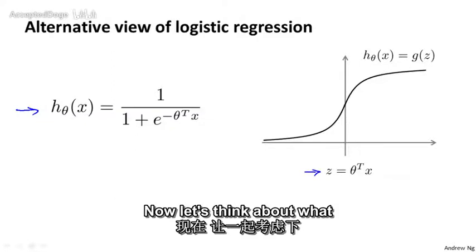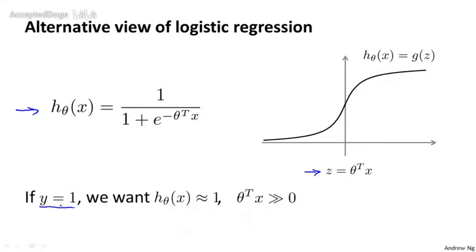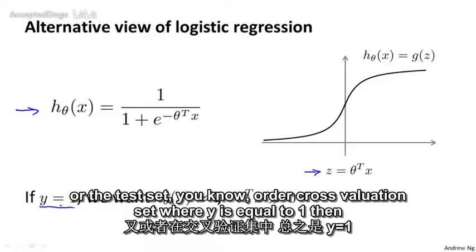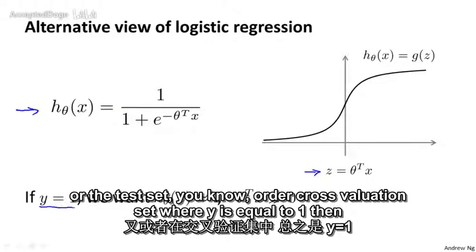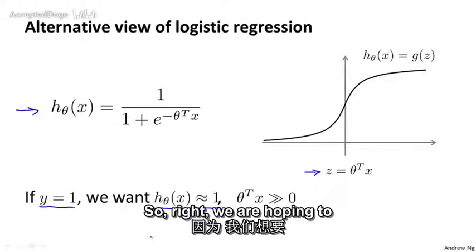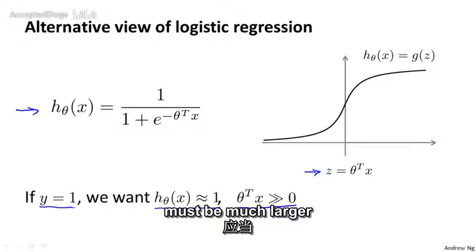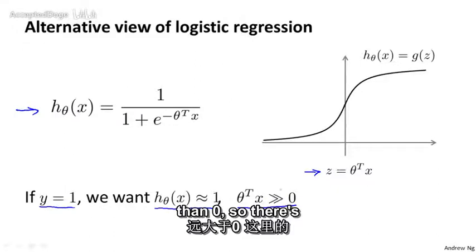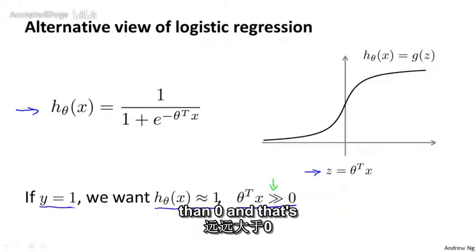Let's think about what we would like logistic regression to do. If we have an example with y equals 1 — whether in the training set, test set, or cross-validation set — we're hoping that h(x) will be close to 1. What having h(x) close to 1 means is that theta transpose x must be much larger than 0, because when z is much bigger than 0 the output of logistic regression becomes close to 1.